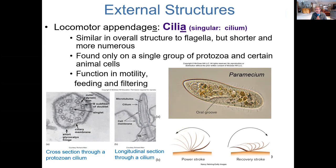For example, ciliated cells lining our trachea or the fallopian tubes help move the egg from the ovary toward the uterus — the cilia aren't helping the cell move since those cells are fixed. But single-celled organisms like paramecium use cilia for locomotion. So cilia can help a single-cell protozoan move, or it can be a fixed structure that helps move materials like mucus or an egg, depending on where the cilia are.